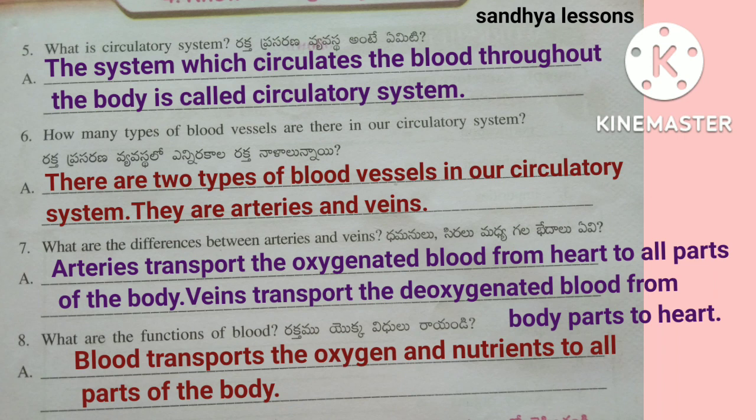Veins transport deoxygenated blood from body parts to the heart. Eighth question: What are the functions of blood? Blood transports oxygen and nutrients to all parts of the body.